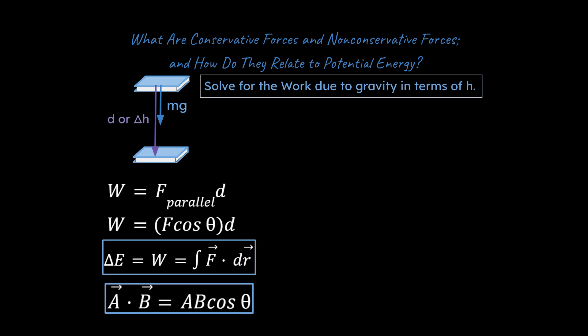So I've got a problem here. Let's imagine we have a book, and this is the book's initial position, and here's the book's final position over here. The problem we're going to attempt to address right now is to solve for the work due to gravity in terms of h. And h isn't labeled here, but that's going to be our height difference between the two positions.